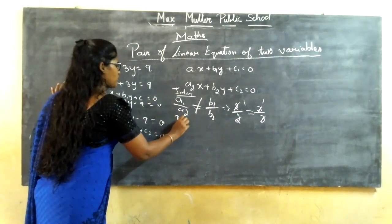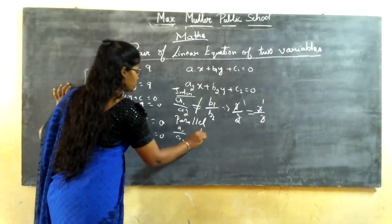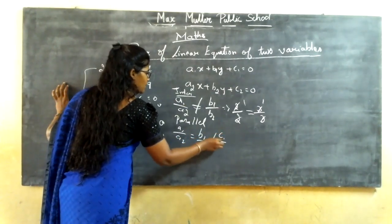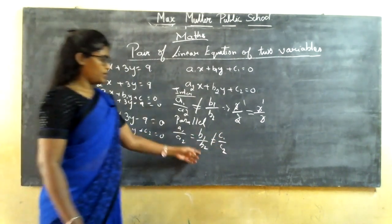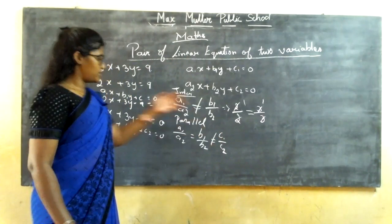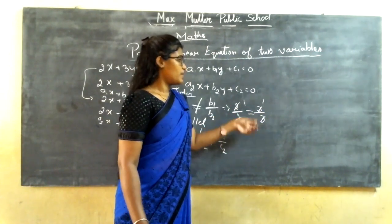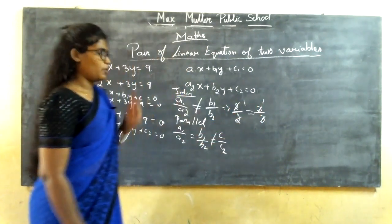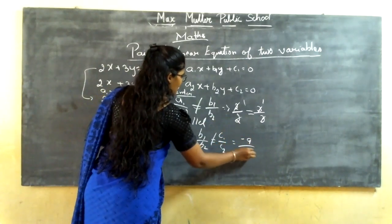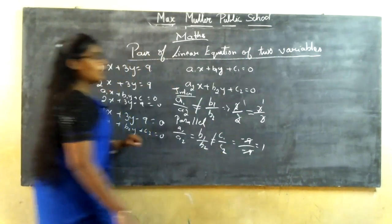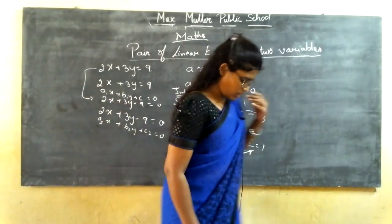The next condition is for parallel lines: a1/a2 should equal b1/b2, but should NOT equal c1/c2. We already have a1/a2 = b1/b2 = 1. Now checking c1/c2: it is -9/-9 = 1. Since all three ratios are equal, the parallel line condition is also not satisfied. So this pair of equations does not represent a parallel line.